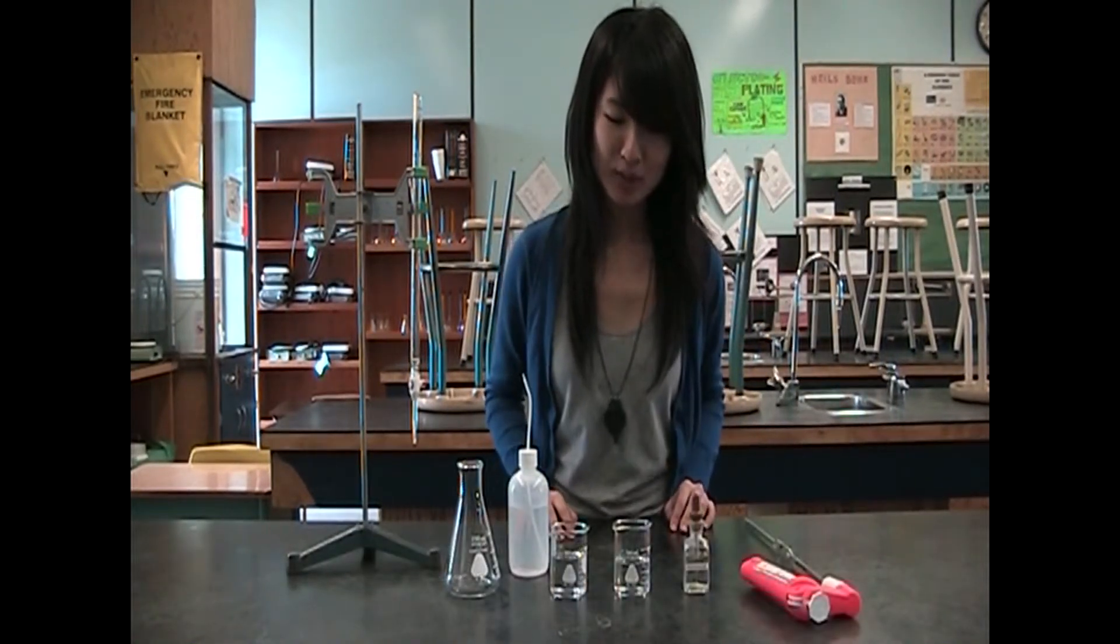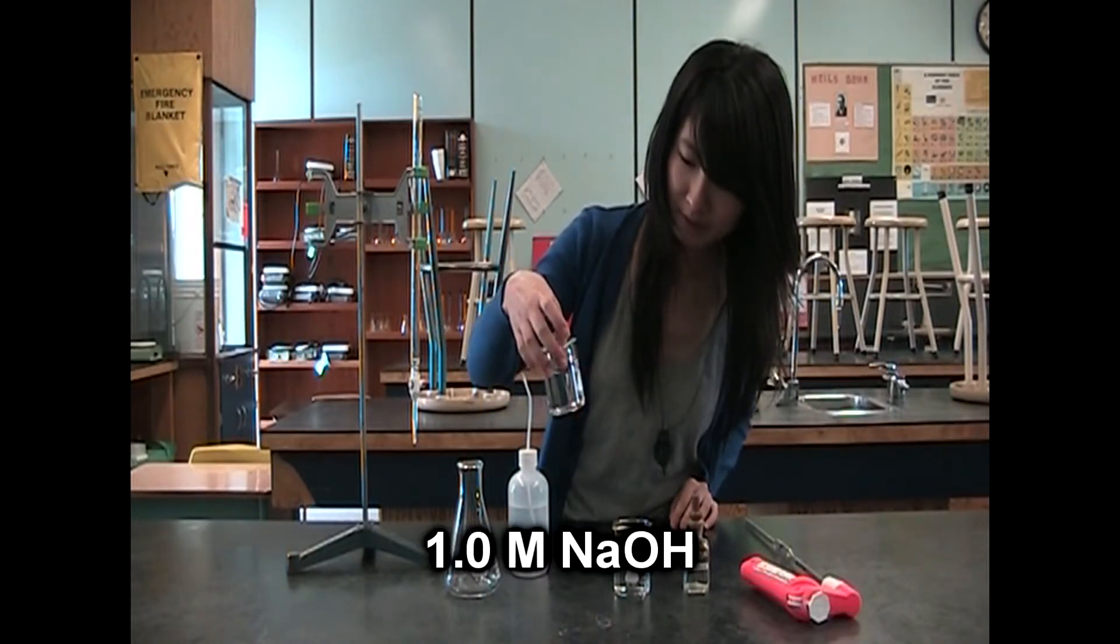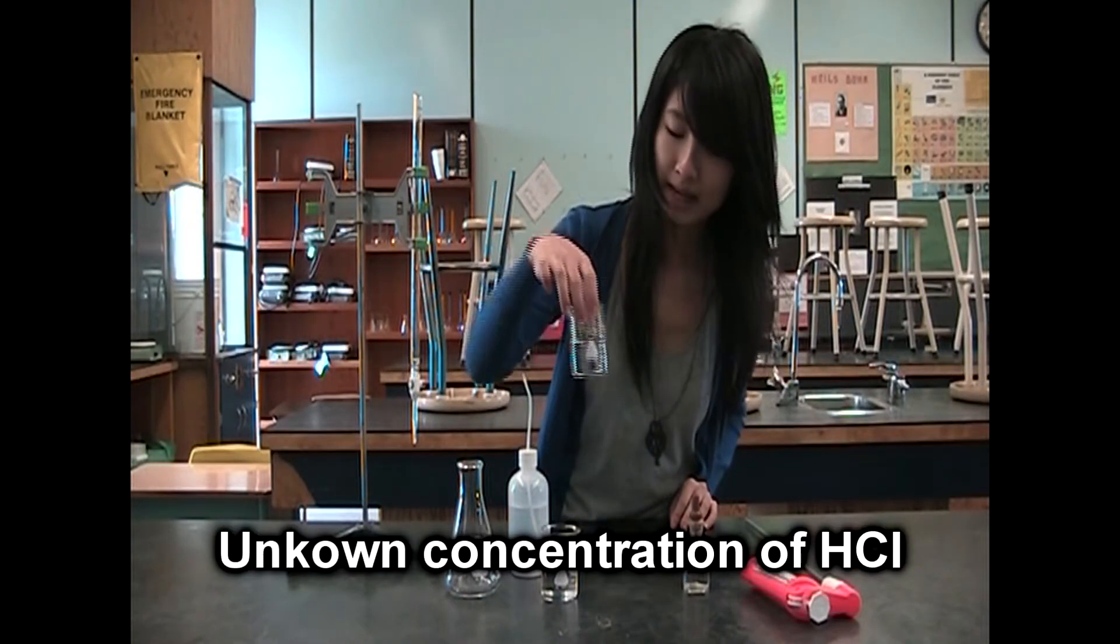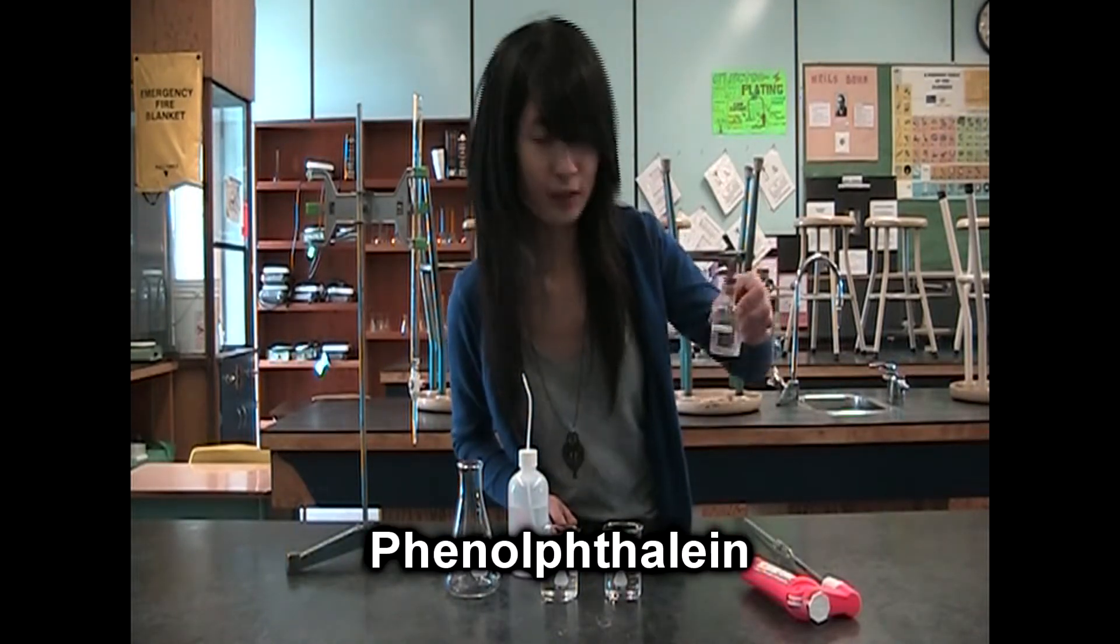These are the chemicals we are using today: 1 molar of sodium hydroxide, unknown concentration of hydrochloric acid, and the indicator is phenolphthalein.